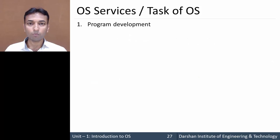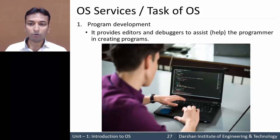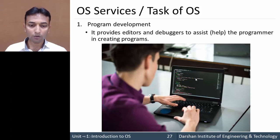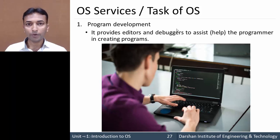The first service is program development. The operating system provides an editor, debugger, or compiler to the application programmer for creating any program. The editor is provided by the operating system for writing the program. Once the program is complete, the programmer compiles or runs it, and the debugger or compiler needed for this is also provided by the operating system.